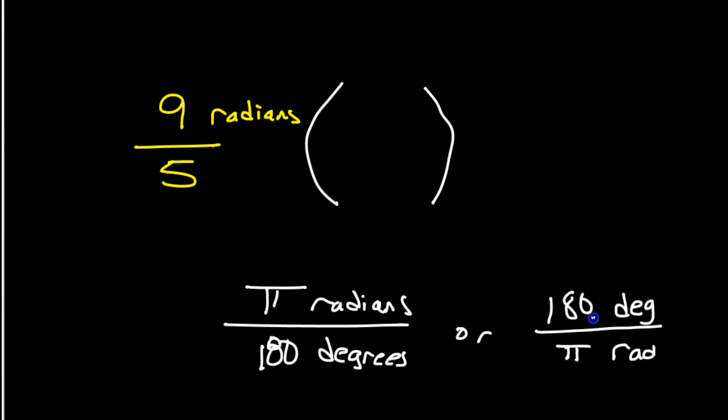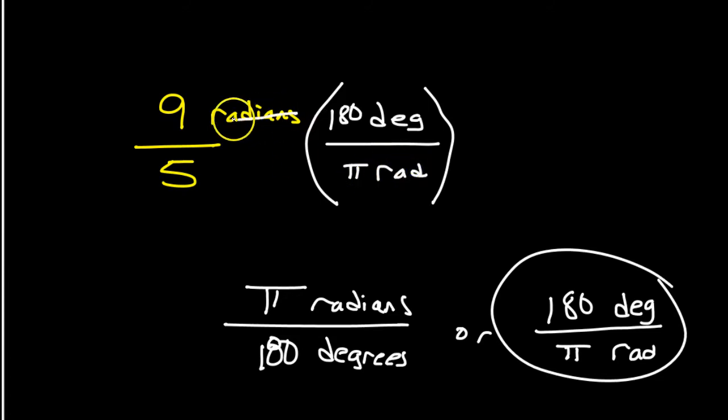I'm tough like that. Anyway, so the question is, how do I know which one of these to use? Well, if I have radians already, I need to cancel out radians and be left with degrees. So I need to pick the version that has radians in the denominator so that it will cancel out. So that's why I'm going to use this version in order to convert from radians to degrees. So I have 180 degrees over pi radians. So radians cancel out and that leaves me with degrees.